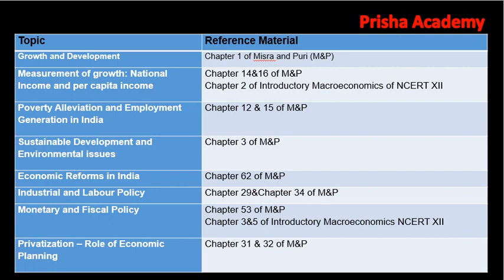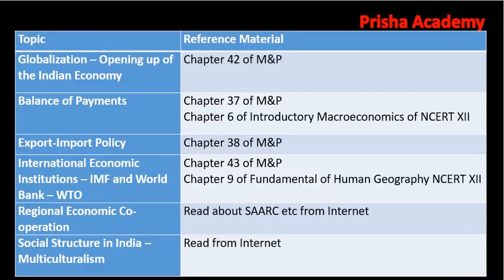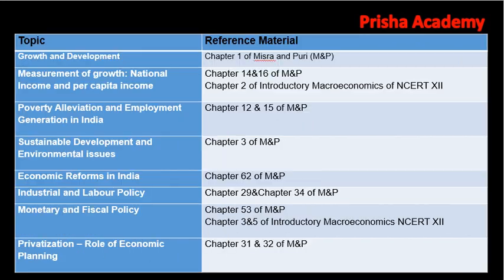The second book is Introductory Macroeconomics, NCERT Class 12. This book is also available in e-copy format — I have given the link of the ebook in the description box so you can download it from there. The third book is Fundamentals of Human Geography, also an NCERT book, which will also be helpful.